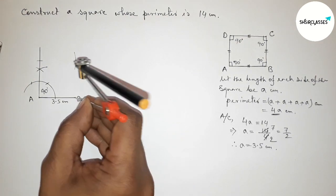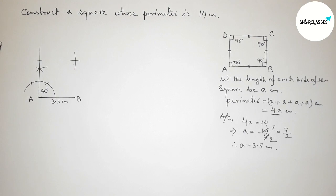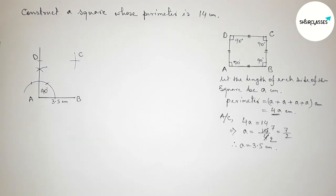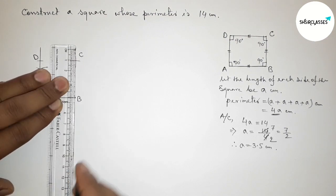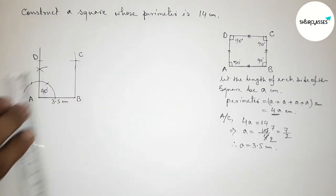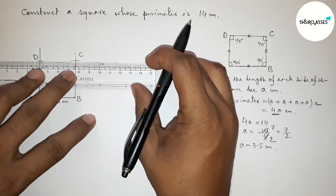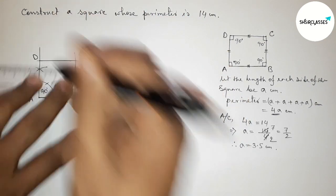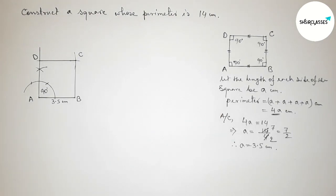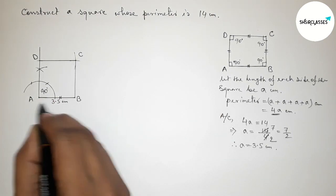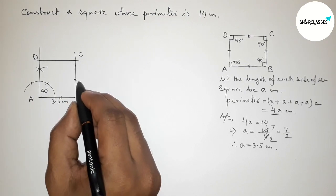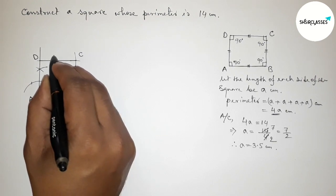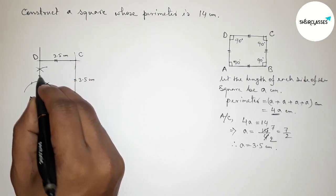Taking the length AB equal to 3.5 centimeters, cutting the same length on the perpendicular at A to mark point D. Putting the compass at B and drawing an arc, then from D cutting the same length to get point C. Joining B to C, then joining C to D.